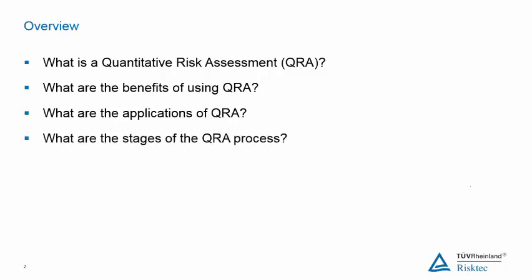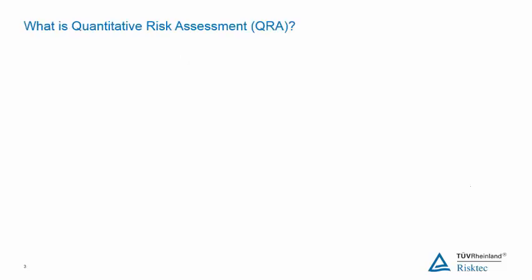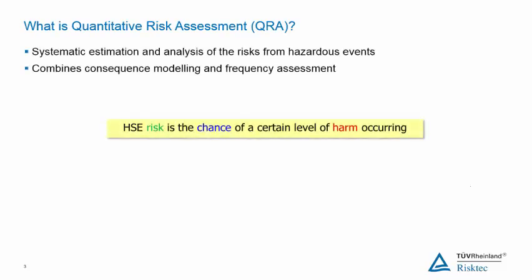The first thing to explore is: what is a QRA? A QRA is a technique which is used to systematically estimate and analyse the risk from hazardous events. It involves predicting the size of consequences associated with the hazard and the frequency at which those consequences may be expected to occur. These two aspects are then combined in order to obtain numerical values for risk, usually the risk of fatality.